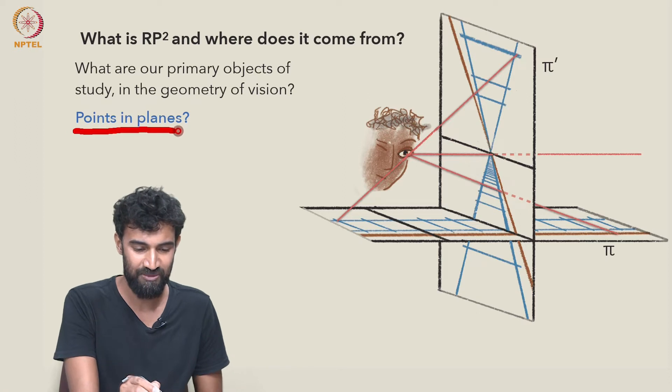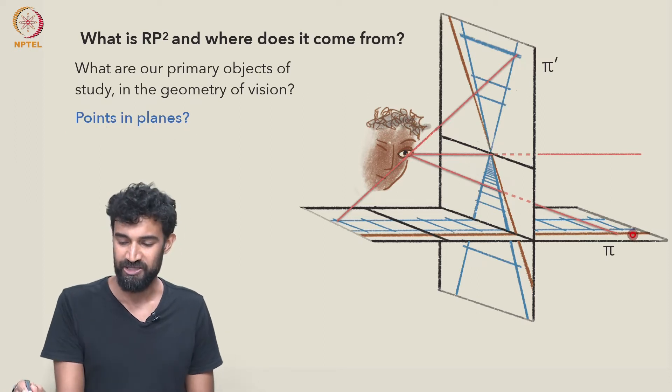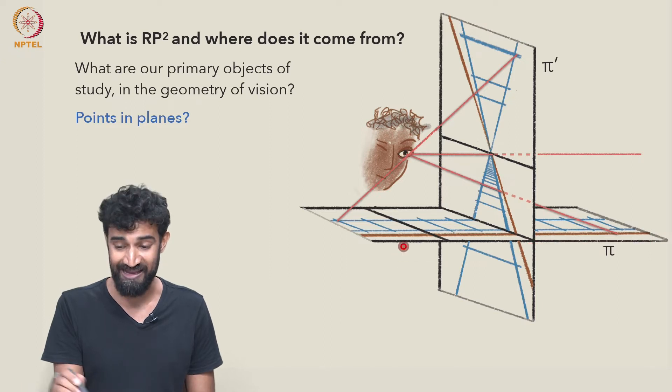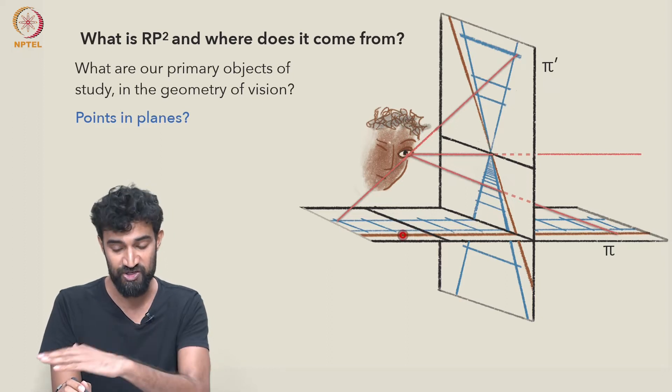And one answer is we're looking at points in planes. Here we have an image of the ground plane π in the picture plane π', and we're studying all these different points in π which make up the railway tracks,